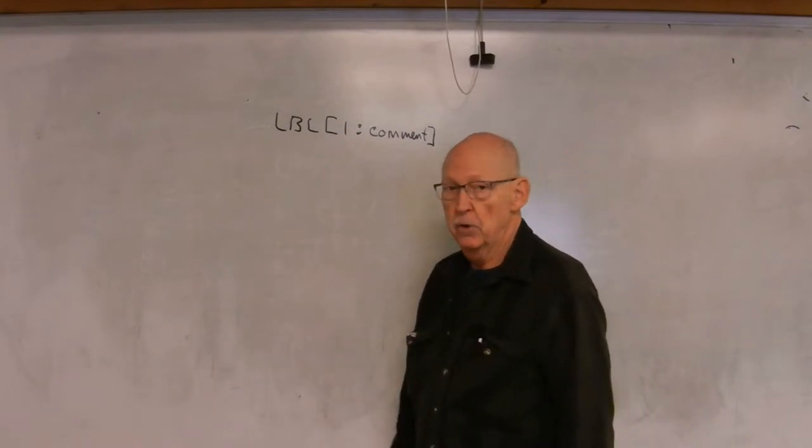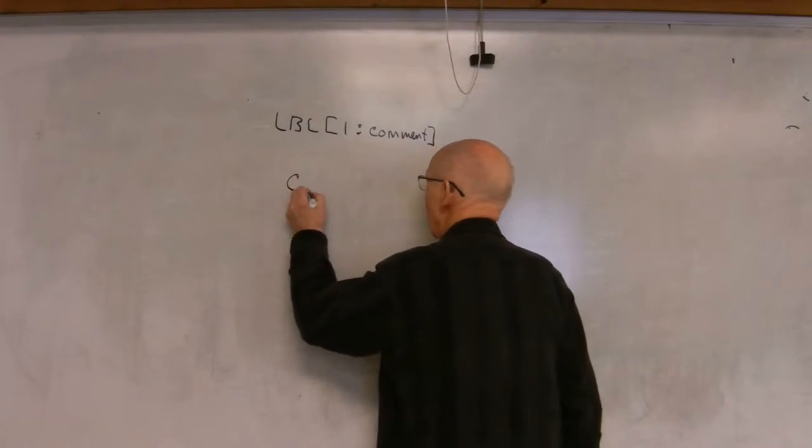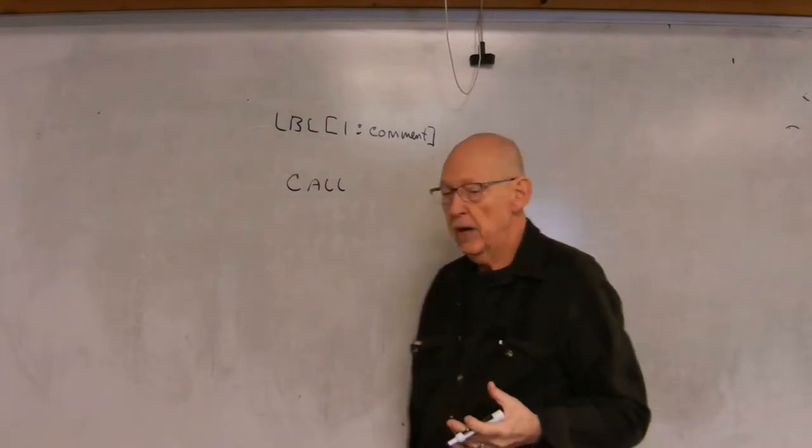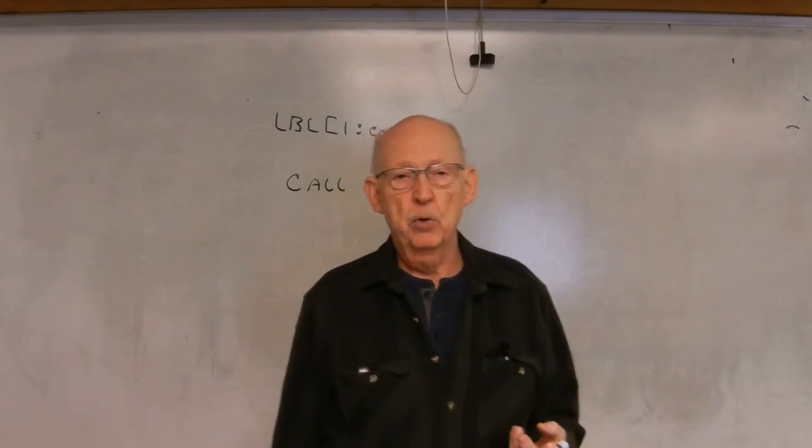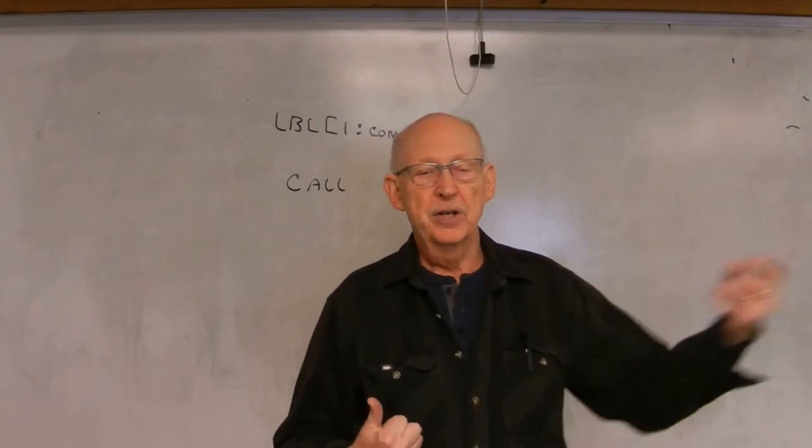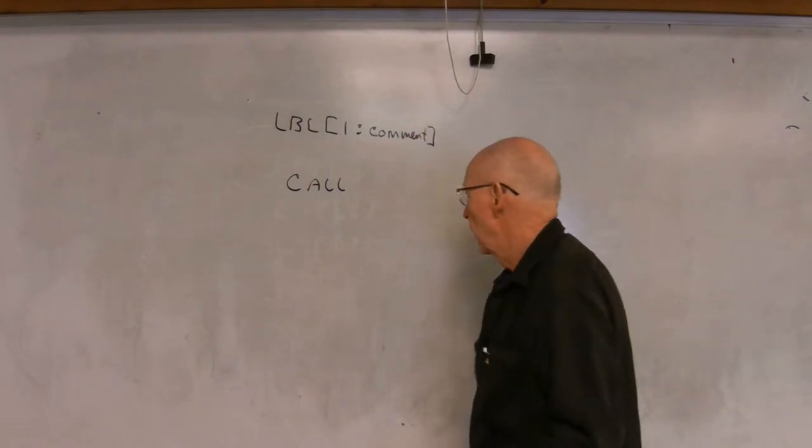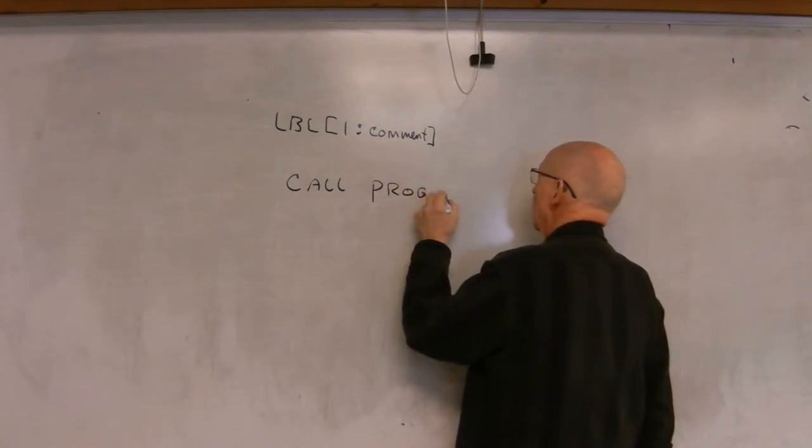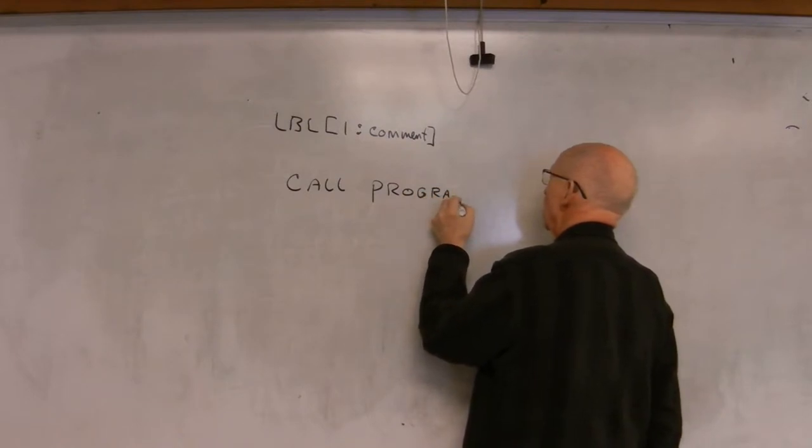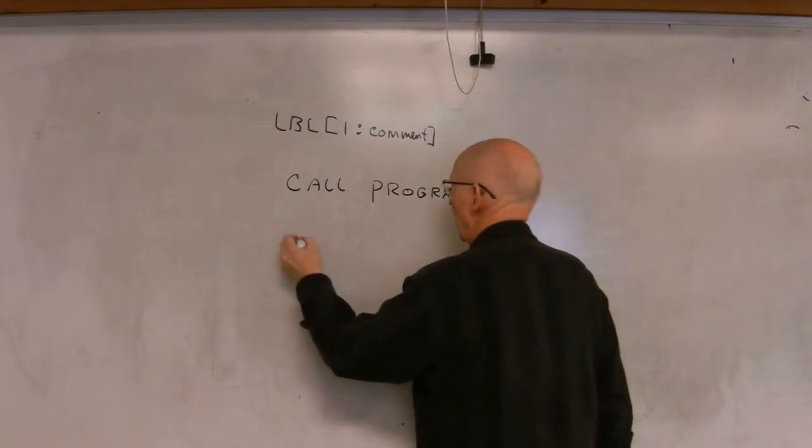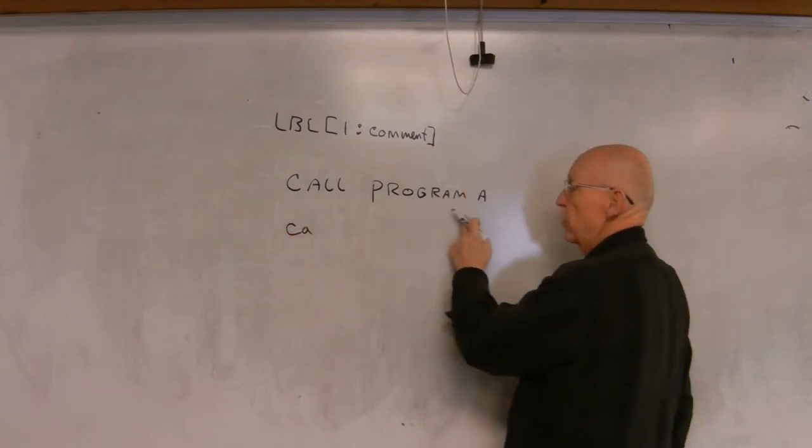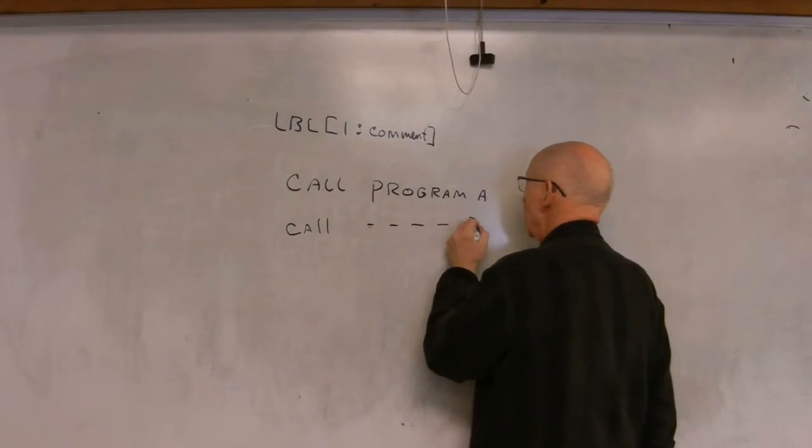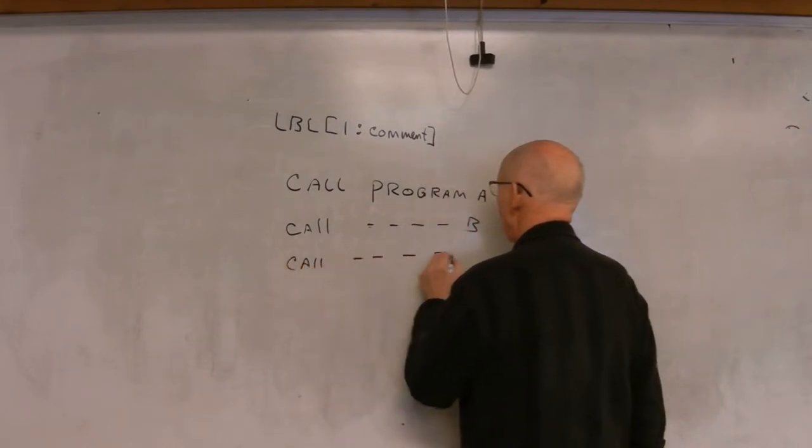Another type—I'll just go ahead and leave the label there for now—is the call instruction. So you could have a label here and let's say you had three programs or any number of programs that you have written, and this program calls them one at a time to execute. So you could say call, and this is just the name of your program. Call program B, you have another one, call program C.